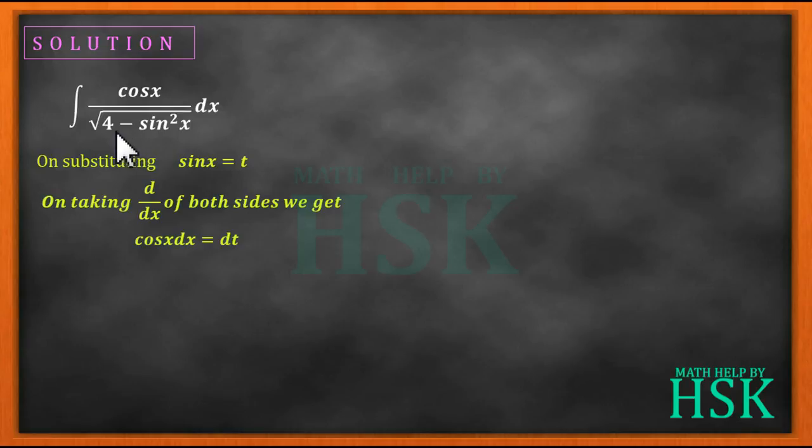And here I'm going to get 4 minus t square. Further this can be written as 1 upon square root of 2 square minus t square dt.